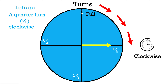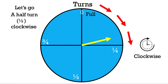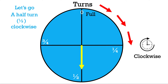Let's move the spinner back to the top so we can do a half turn. Some of you may already know where we're going to end up — take a guess! We go in the clockwise direction again, passing the quarter turn, and we reach a half turn in the clockwise direction.